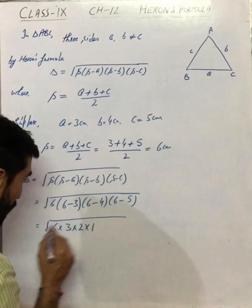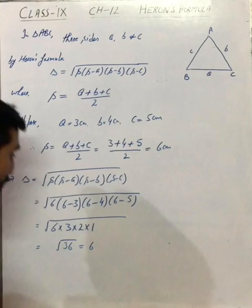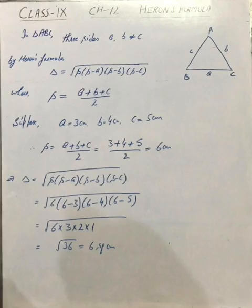6 into 3 into 2 will give you 36, which will be 6 square centimeter. So this is the area of triangle ABC whose 3 sides are 3, 4 and 5 centimeter.